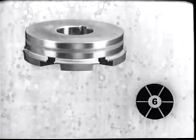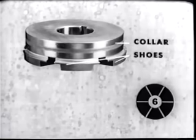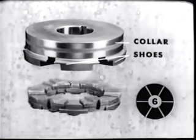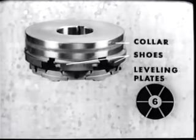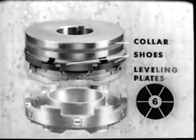When the number of shoes is increased to four or more, the equalization problem must be solved in a different way. Automatic equalization and alignment is made possible by supporting the shoes on rocking or balancing parts called leveling plates. The assembly of shoes and leveling plates fits into a base ring.